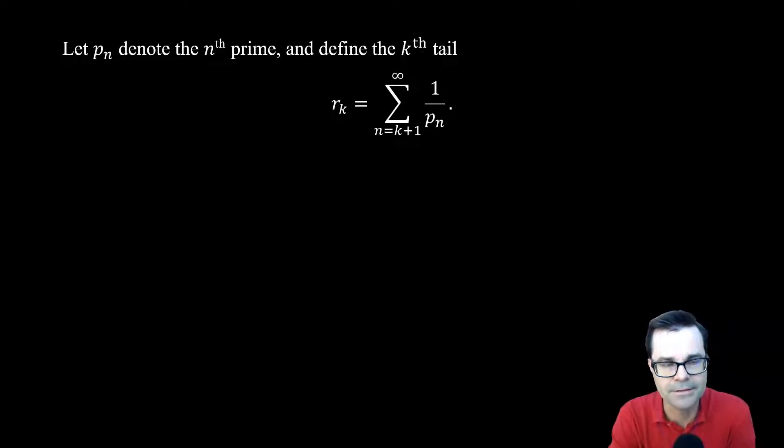So let pn denote the nth prime. And so the kth tail, rk, here is just going to be the sum of all the reciprocals of the primes except the first k terms here.